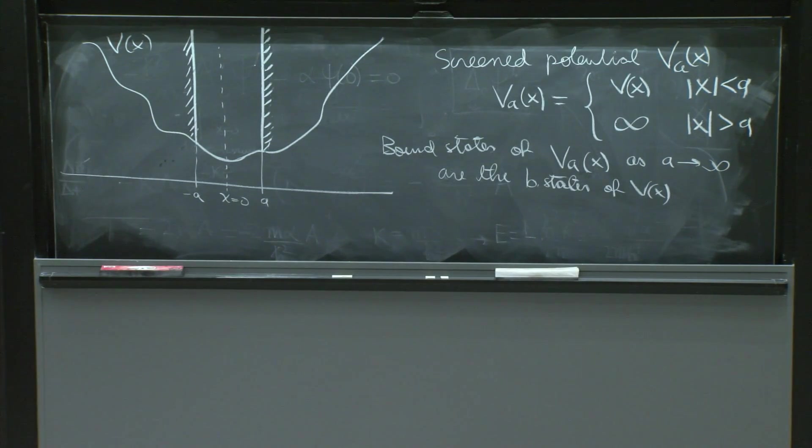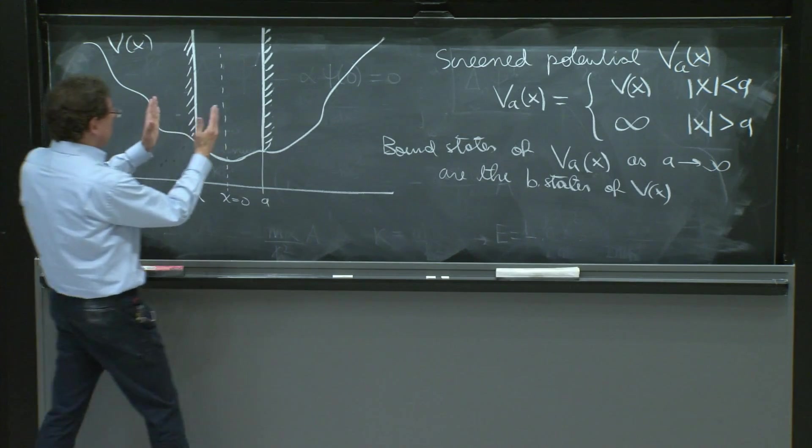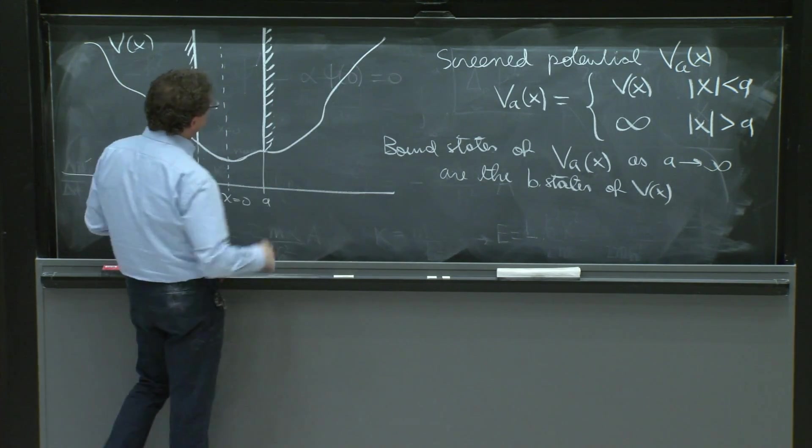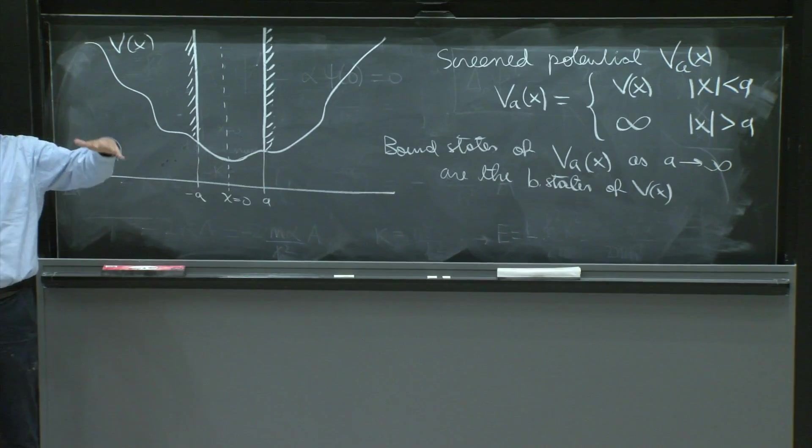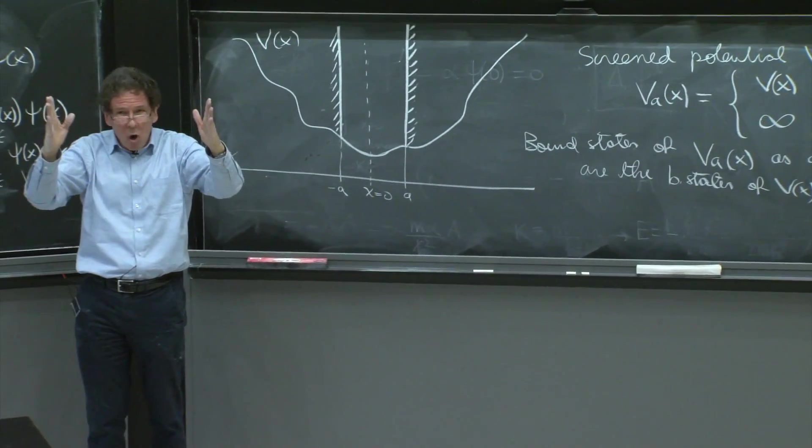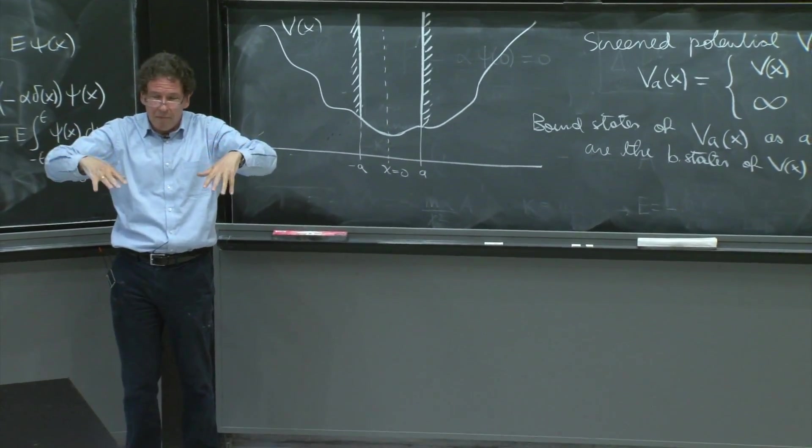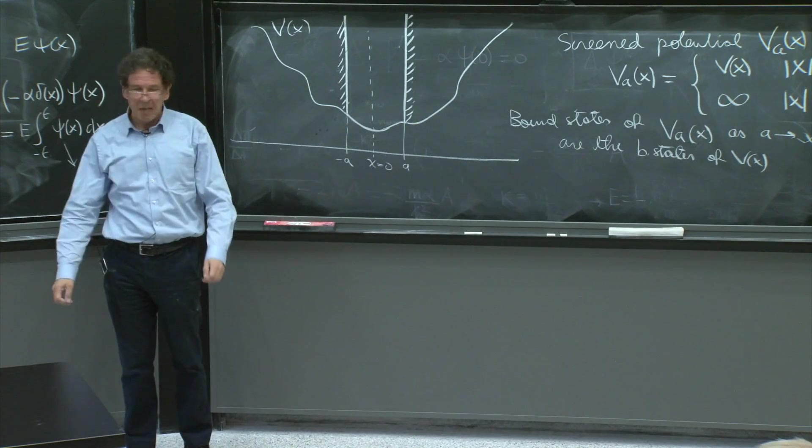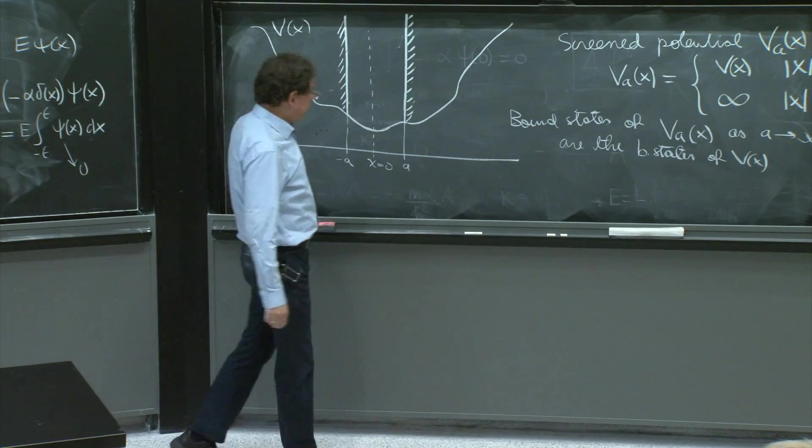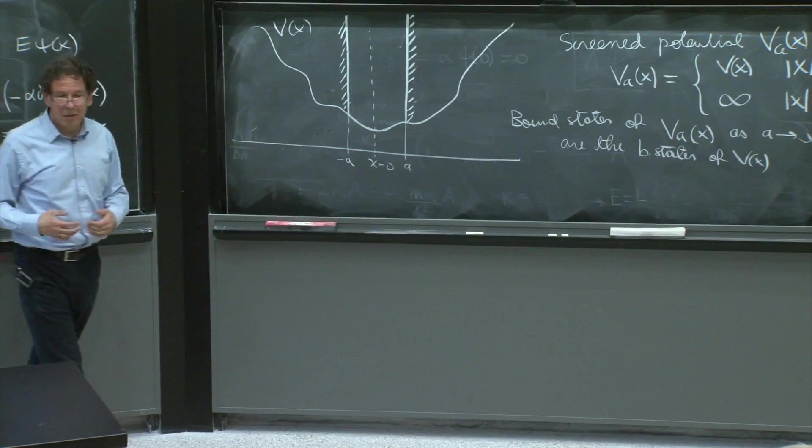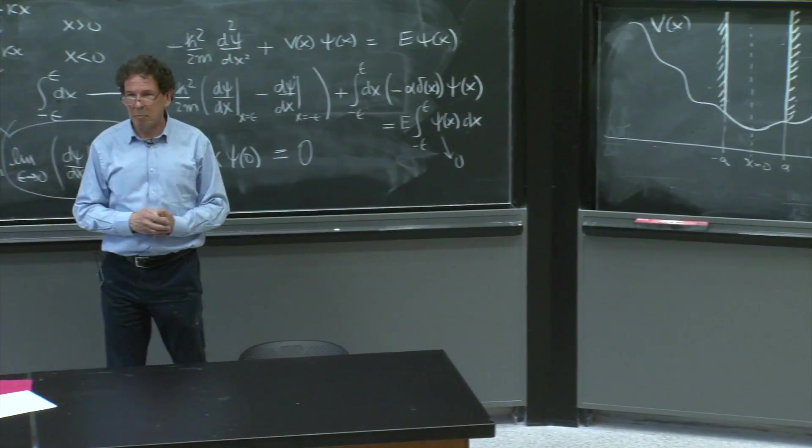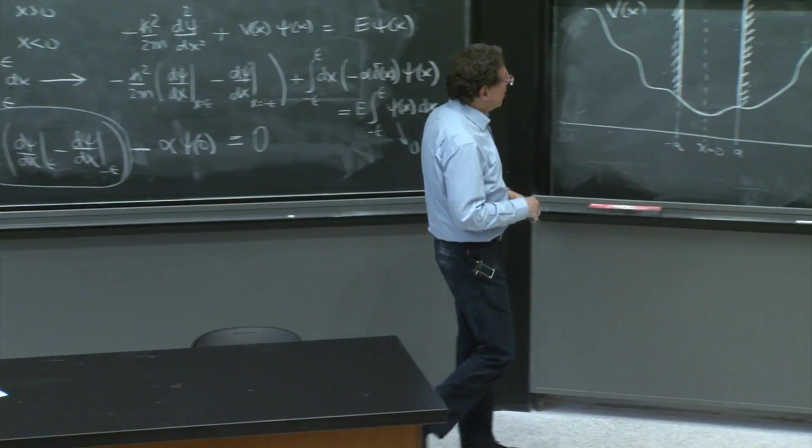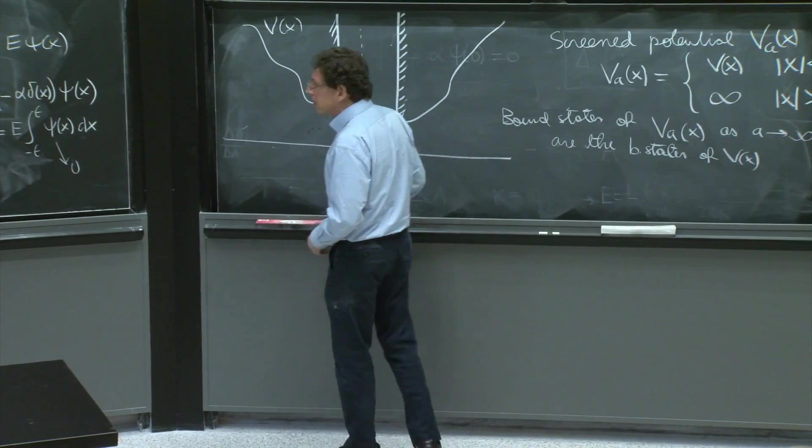And moreover, as you slowly increase the width of the screen, the bound states evolve. But they evolve continuously. At no point a bound state sort of blows up and reappears or does something like that. It just goes continuously. These are physically reasonable. But a mathematician would demand better explanation. But that's OK. We will stick to this.